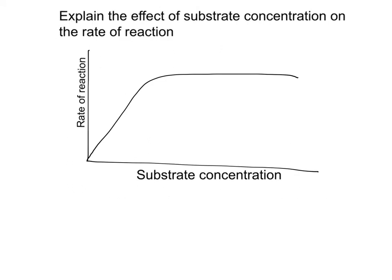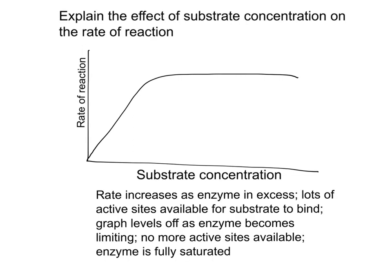Now you need to explain what's happening. Initially, the rate is increasing as the enzyme is in excess — there are lots of active sites available. So if you add more substrate, the active sites just get more full and the rate of reaction increases. The graph then levels off because the enzyme becomes limiting. All the active sites are full, so adding more substrate won't increase the rate because there are no more active sites available for the substrate to bind to. The enzyme is fully saturated. These are the key mark points.